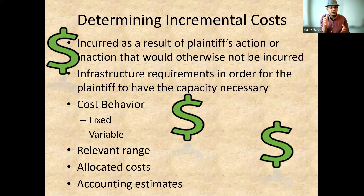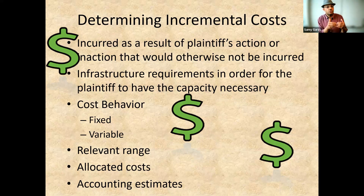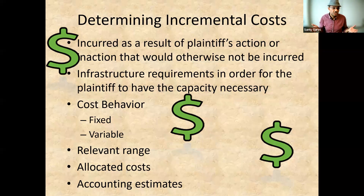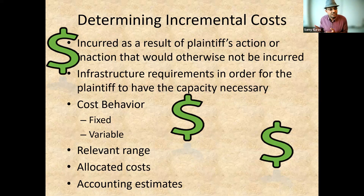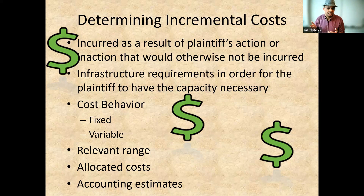Fixed costs are like rent. If we pay rent for real estate or an office building, we keep paying it whether there is fraud or not — so this is a fixed expense that doesn't change. Variable costs include items like salary, which can change from year to year, or advertising or commissions. These kinds of expenses are variable based on sales and production. Then we use the relevant range — which period we need to address in our calculation.